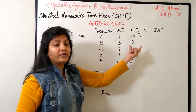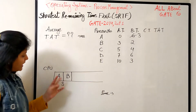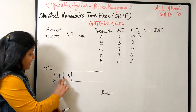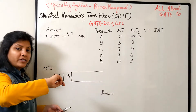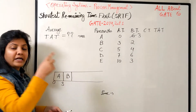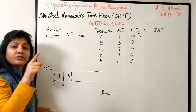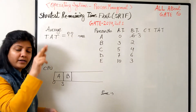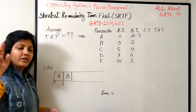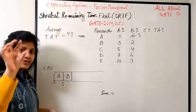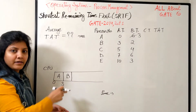At time three, B has also arrived and needs two bursts, while A needs three. B is definitely smaller, so let's schedule B. In SRTF preemption, A goes back to the ready queue and B gets scheduled. This is exactly the transition from running state to ready state in the state diagram.